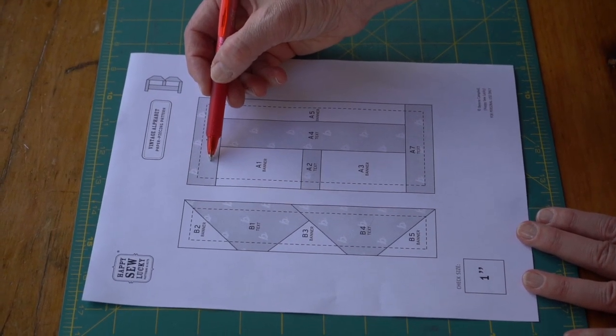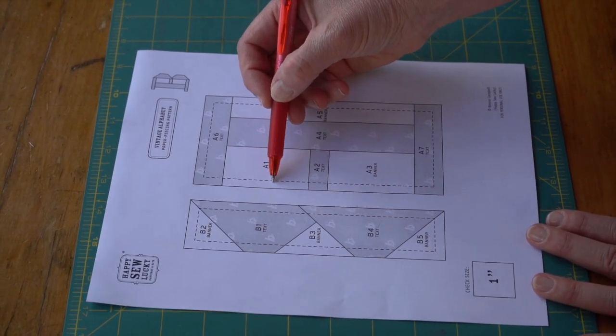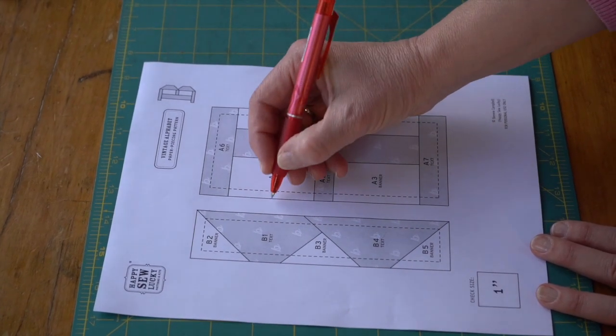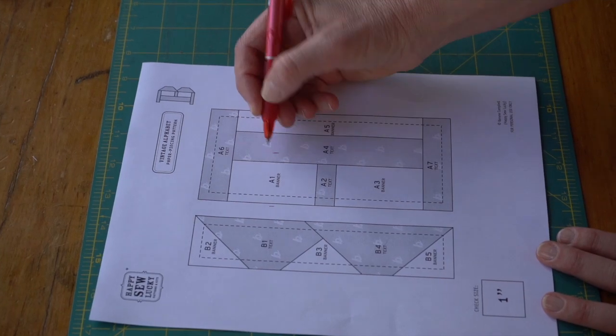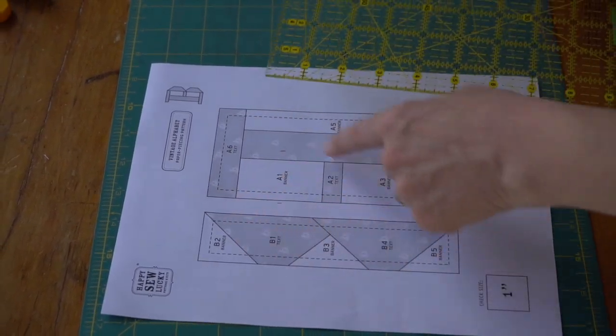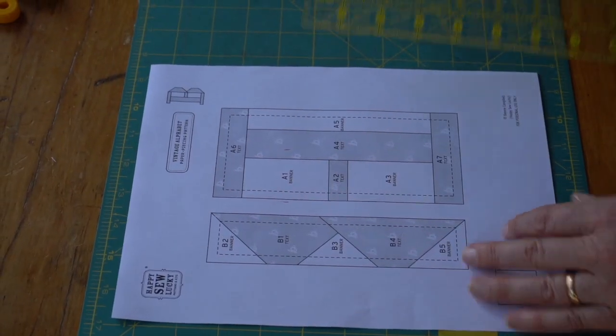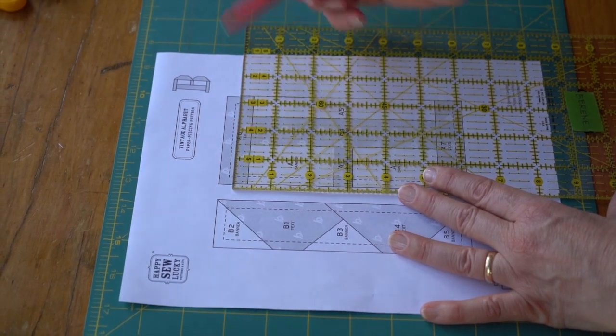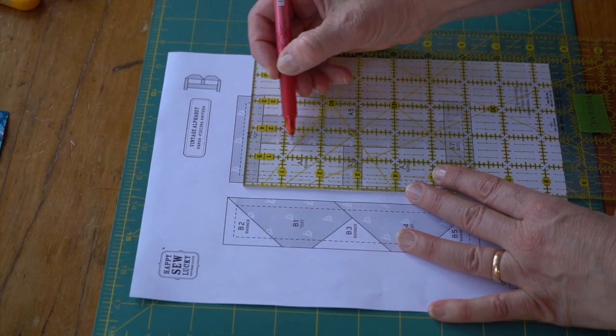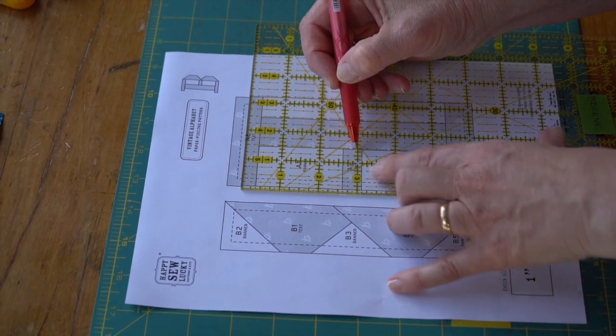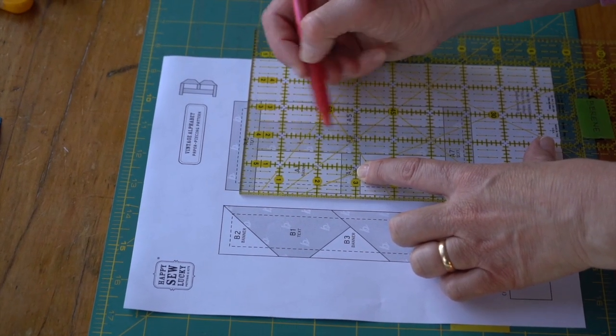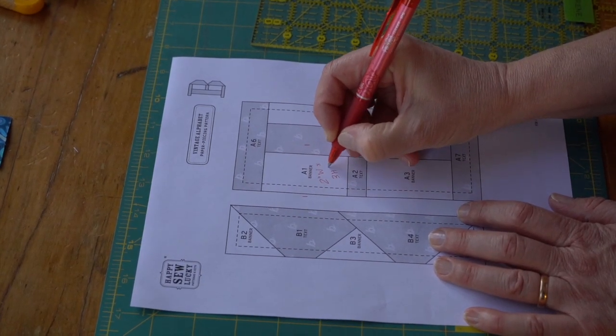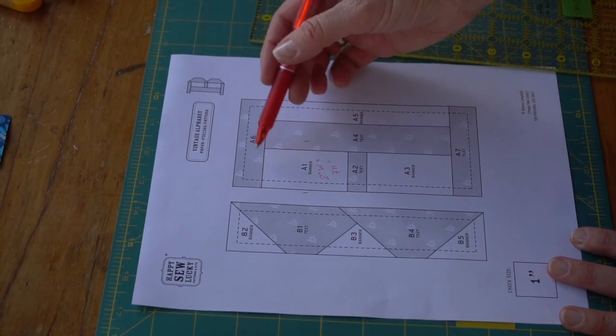So we need to add at least a quarter here, here and here. And you could in theory cut that there but it doesn't give you any room for error. So I usually go at minimum 3/8 all the way around. Which means that here where there's a quarter I just need to add an extra eighth. So you just put your ruler down. I'm going to measure 3/8 of an inch above this seam line, 3/8 from this seam line, and 3/8 from here. So it works out to about 1 3/4 by 3. So I'm just going to round that up to a 2 by 3.